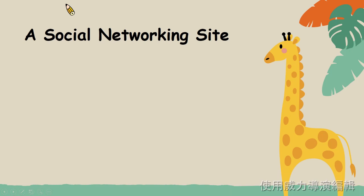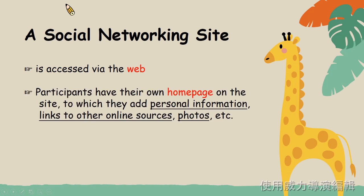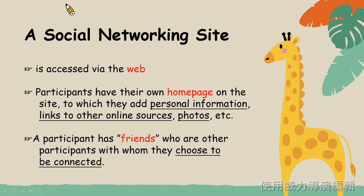The next term is a social networking site. A social networking site is accessed via the web. Social networking site呢,就是社群網站。 Participants have their own homepage on the site, to which they add personal information, links to other online sources and photos, etc. 那社群網站的使用者會有自己的主頁,在自己的主頁上就可以放上個人訊息、資料以及照片、連結等內容。 Normally, a participant has friends who are other participants with whom they choose to be connected. 那社群網站上也會有加好友的功能。